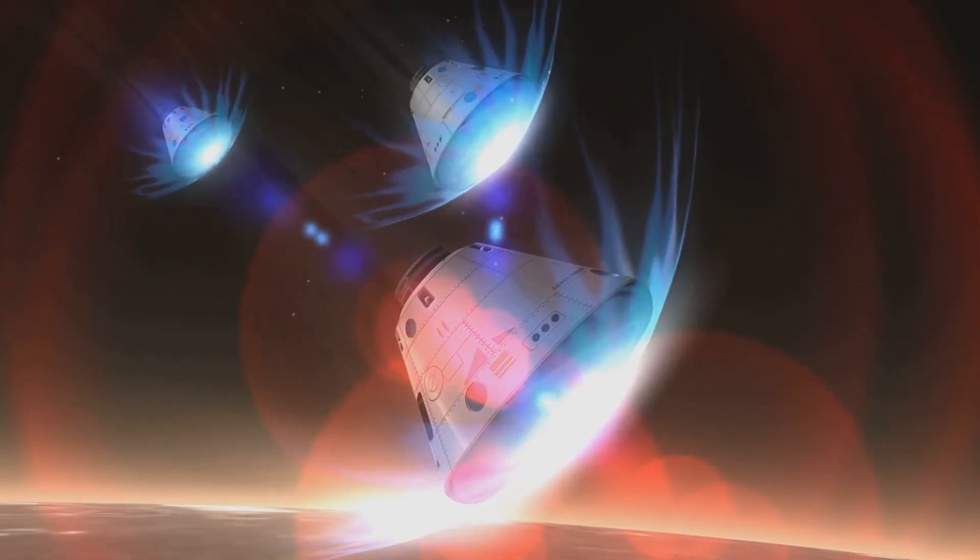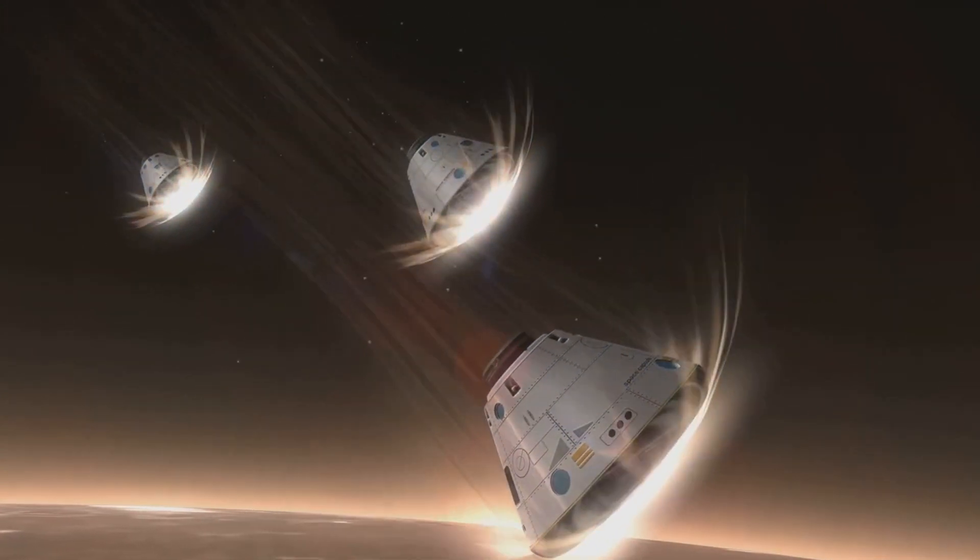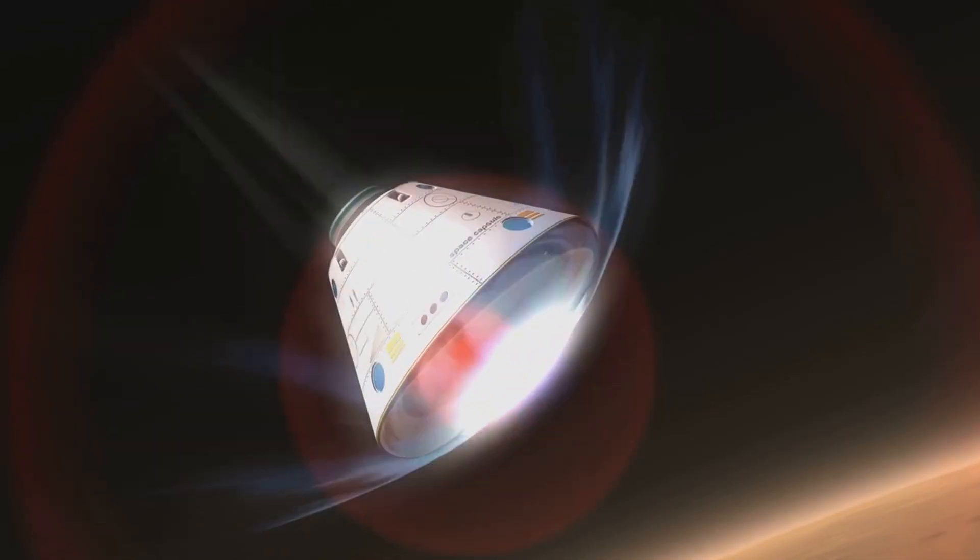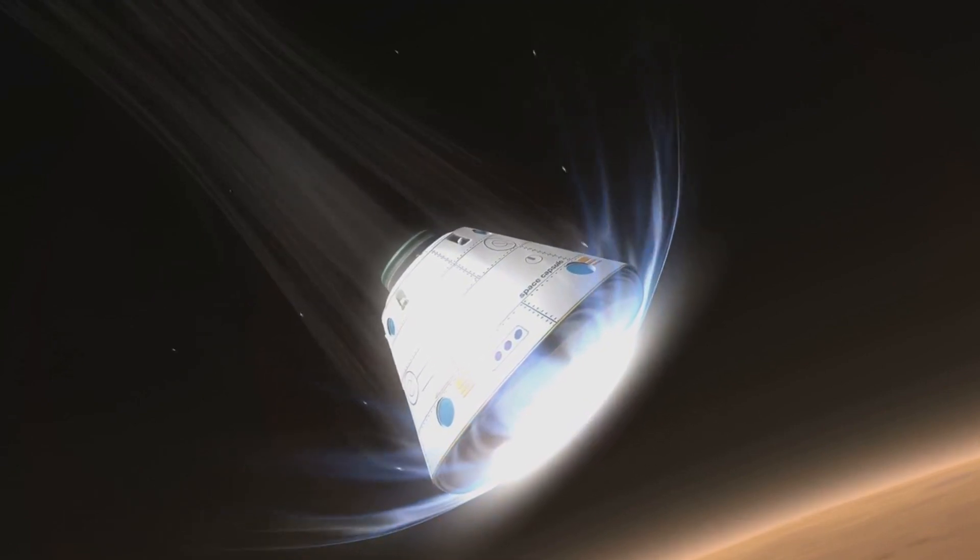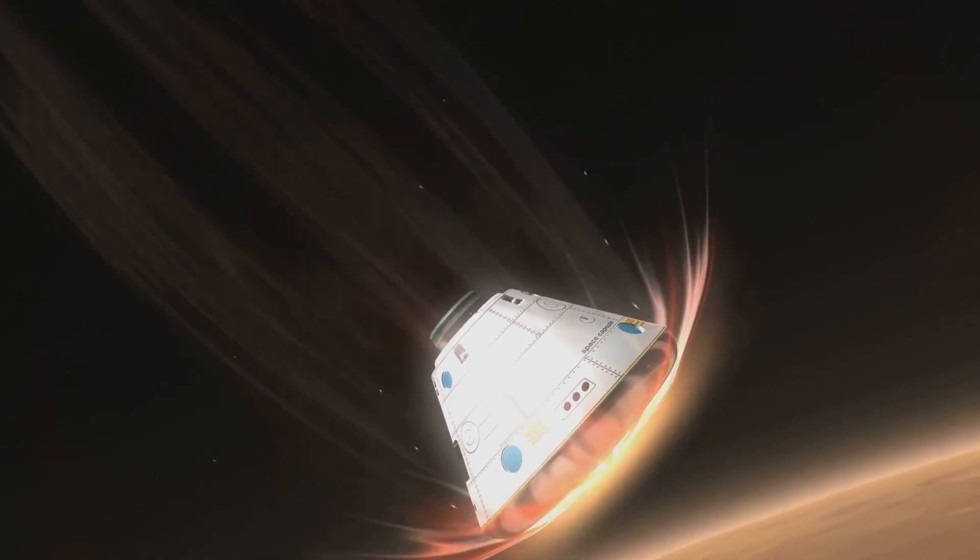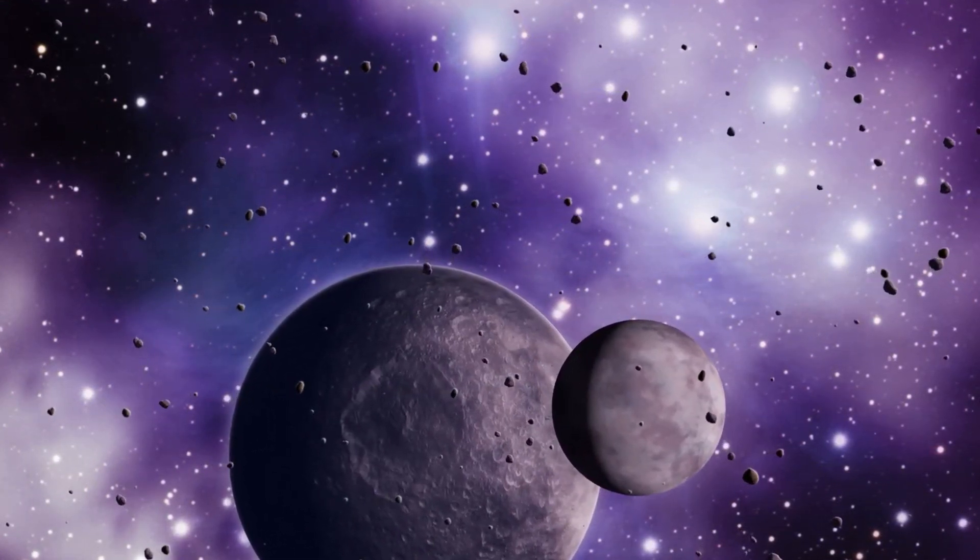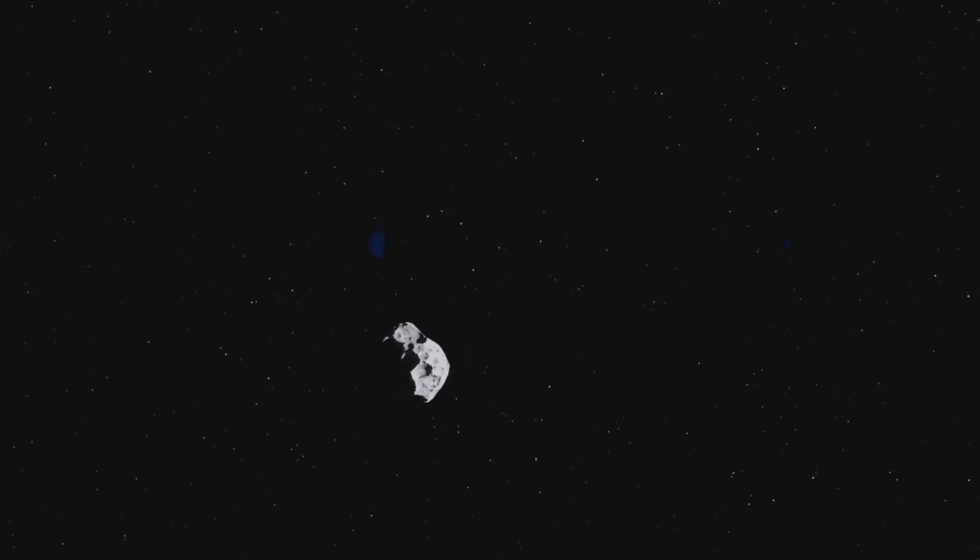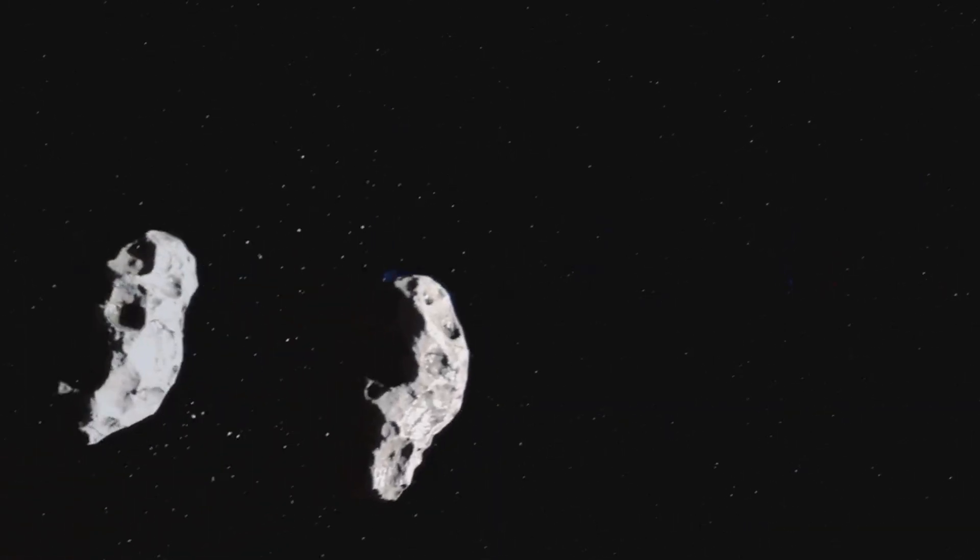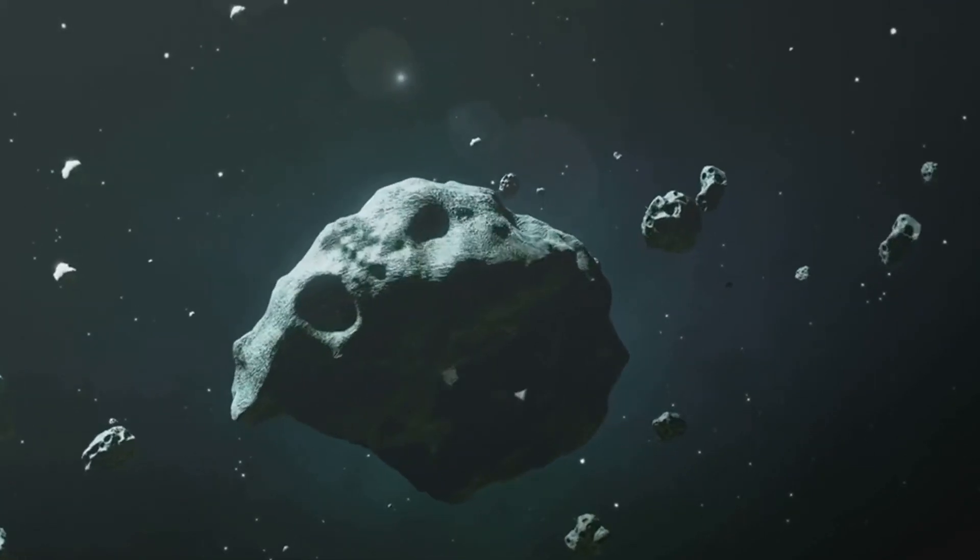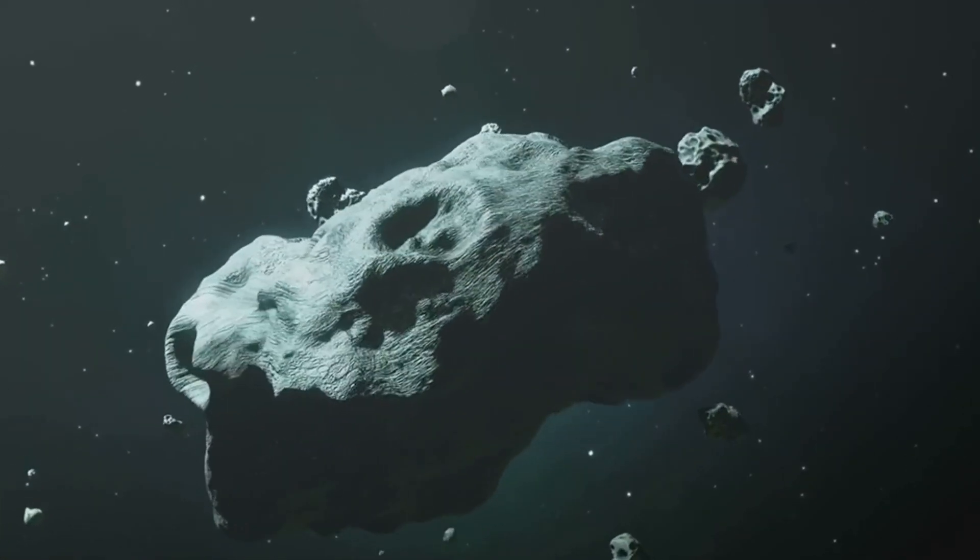But spotting a cosmic bullet is just the first step. Deflecting it is the real challenge. And that's where missions like NASA's Double Asteroid Redirection Test, or DART, come into play. Slated for launch in late 2021, DART aims to crash into the moonlet of a binary asteroid system to change its course. A real-life demonstration of the classic Hollywood trope. Beyond DART, we're also exploring other deflection strategies, such as the use of gravity tractors, kinetic impactors, and even nuclear devices. Each of these methods has its own advantages and challenges. And the choice of strategy would depend on the size, composition, and trajectory of the incoming asteroid.